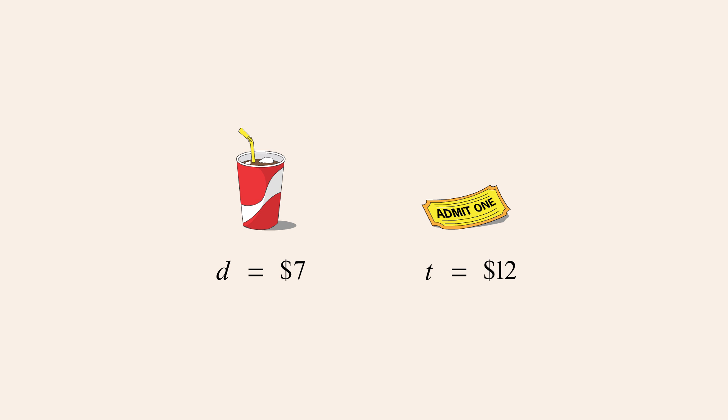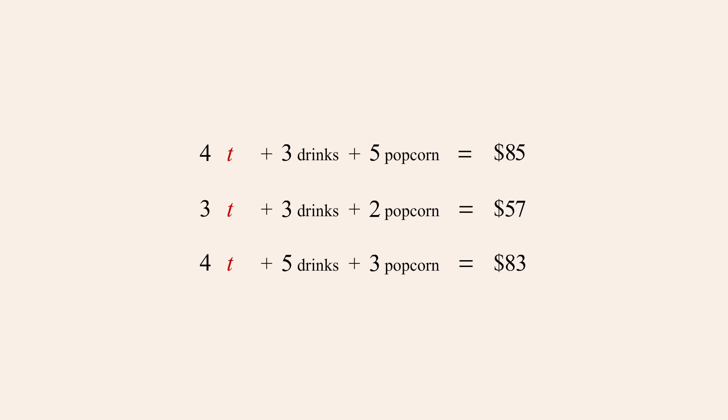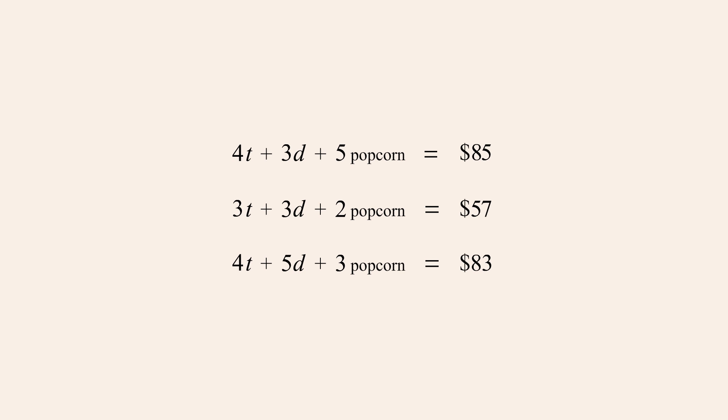With a system of three linear equations in three variables, we could model the same problem with three groups of people who buy three different items at a different theater: tickets, drinks, and popcorn. In this example, we could choose the variables t, d, and p to represent the price of a ticket, a drink, and popcorn.